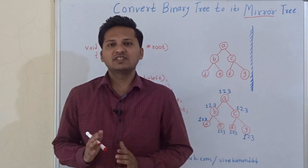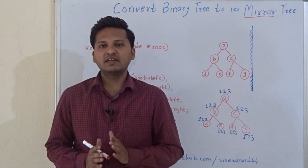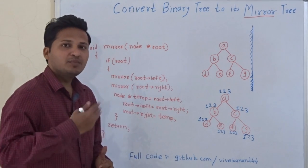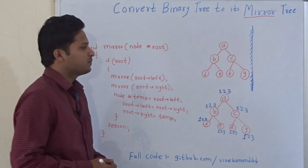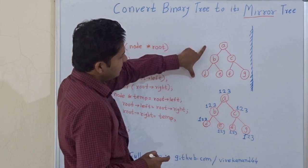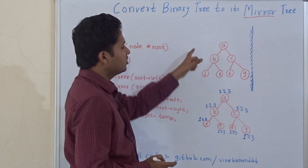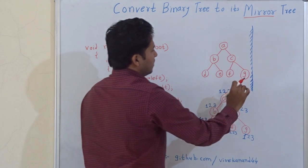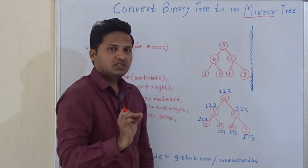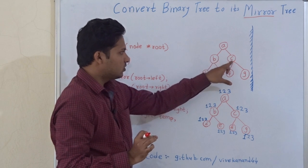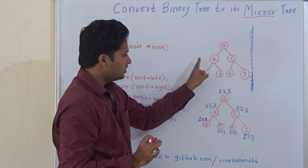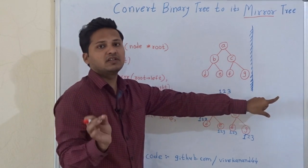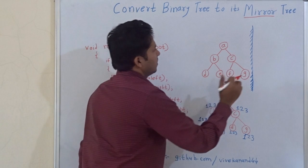Hello friends, today we are going to see how to convert a binary tree into its mirror image. So let's see what is a mirror image of a binary tree. Here is the tree, and I will show you what should be the mirror image of this tree. In any mirror image, for any node in this tree, the left child of the node will become its right child in the mirror image.